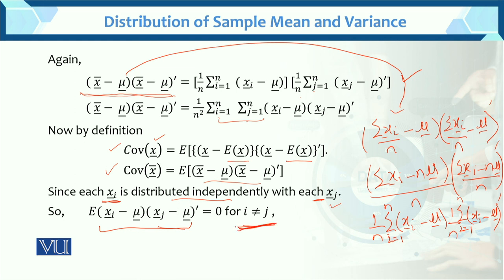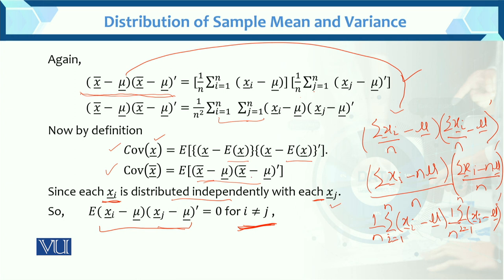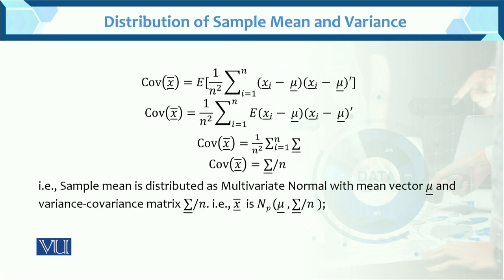Now for the covariance of x̄, we substitute the values. Applying expectation to the random variable terms, we get the covariance term for the i-th unit, which equals Σ (sigma). Since sigma is a constant, sum applies with it: this gives n times sigma divided by n squared, which cancels to give the covariance of x̄ equals Σ/n.